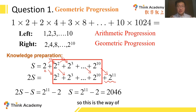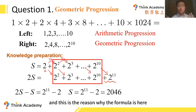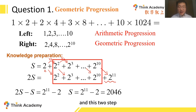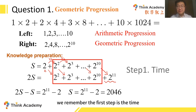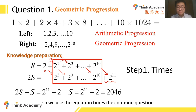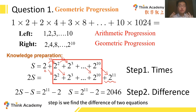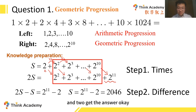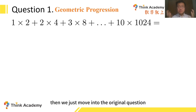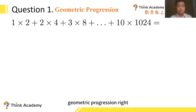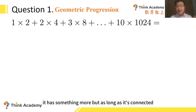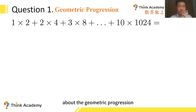So these two steps to remember: the first step is to multiply the equation by the common quotient, and the second step is to find the difference of the two equations to get the answer. Now this is the basic geometric progression. We move into the original question. This equation is not a typical geometric progression — it has something more — but as long as it's connected to the geometric progression, we can always use this times-and-difference method to solve it.